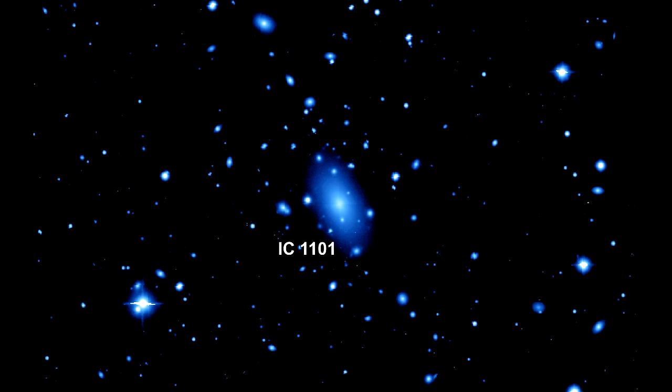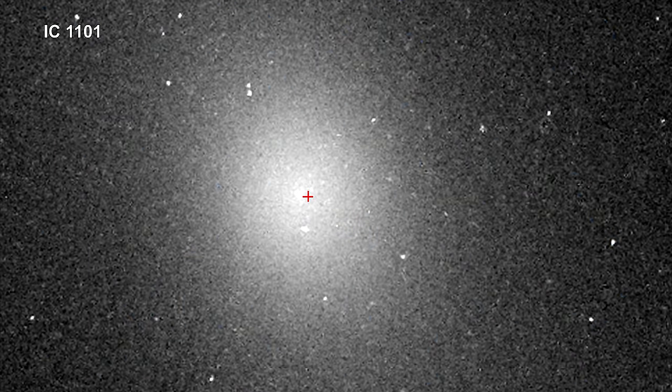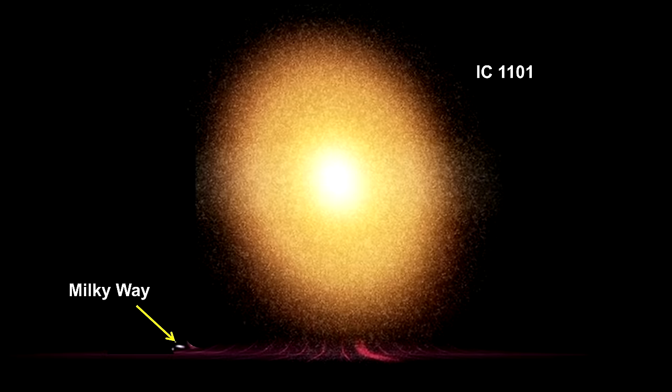The large elliptical galaxy visible in the center of the image is IC 1101. It is the largest galaxy ever seen. It is 6 million light-years across, 60 times larger than our Milky Way, and contains around 100 trillion stars.